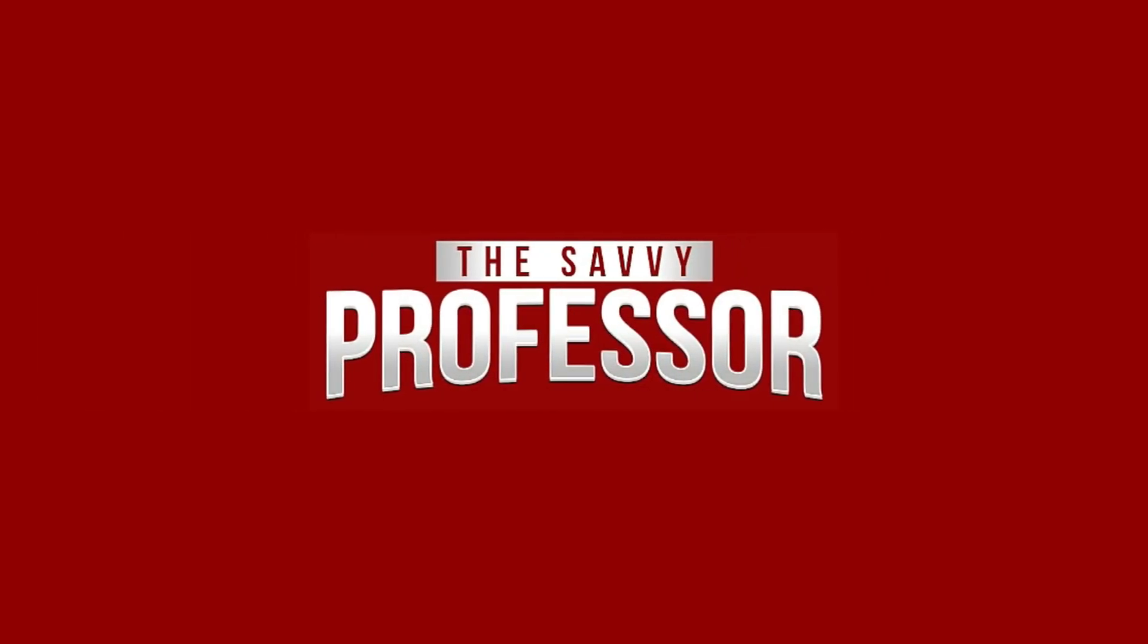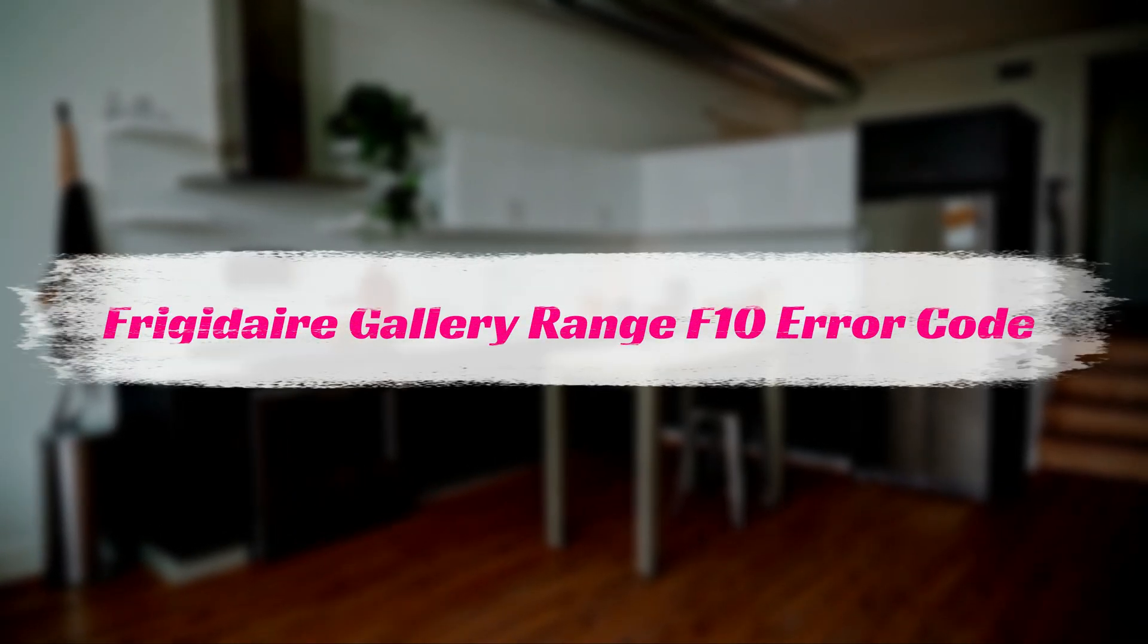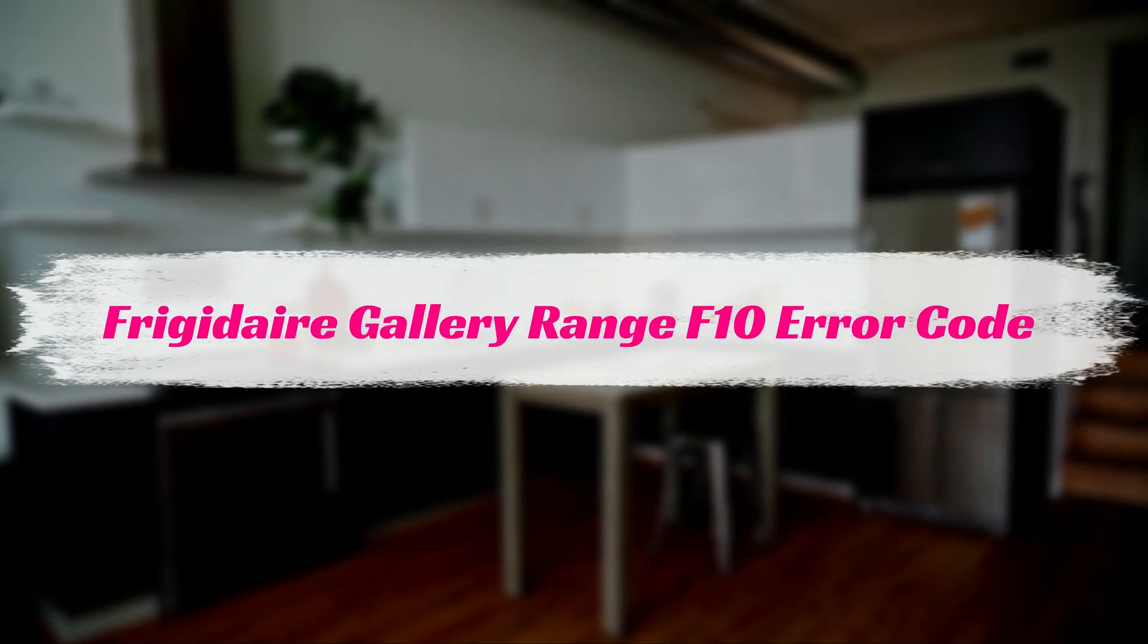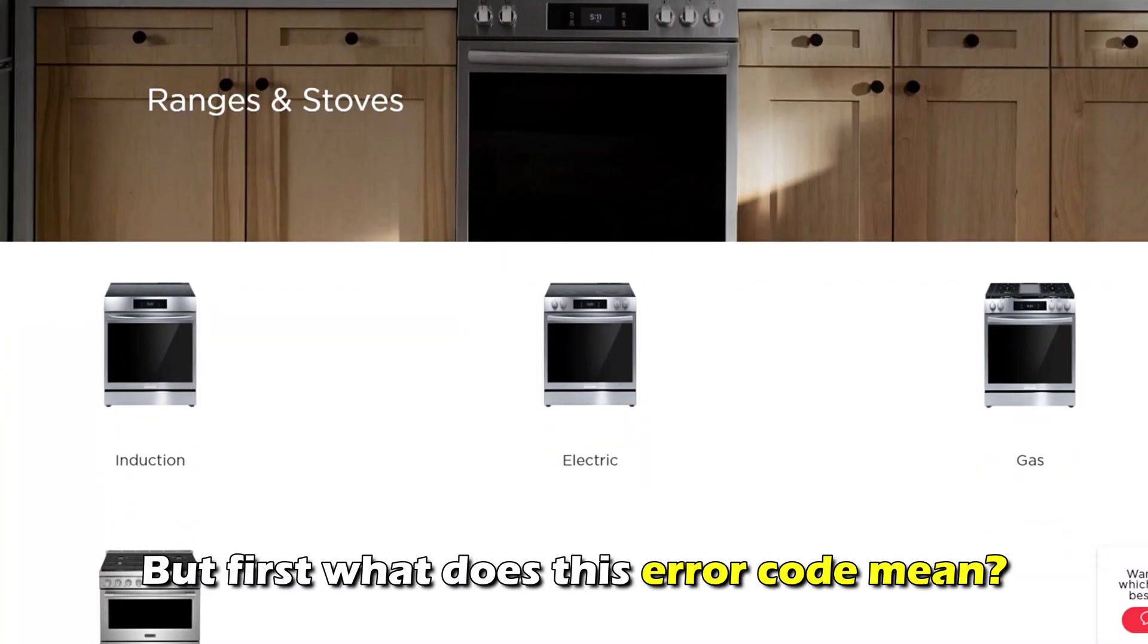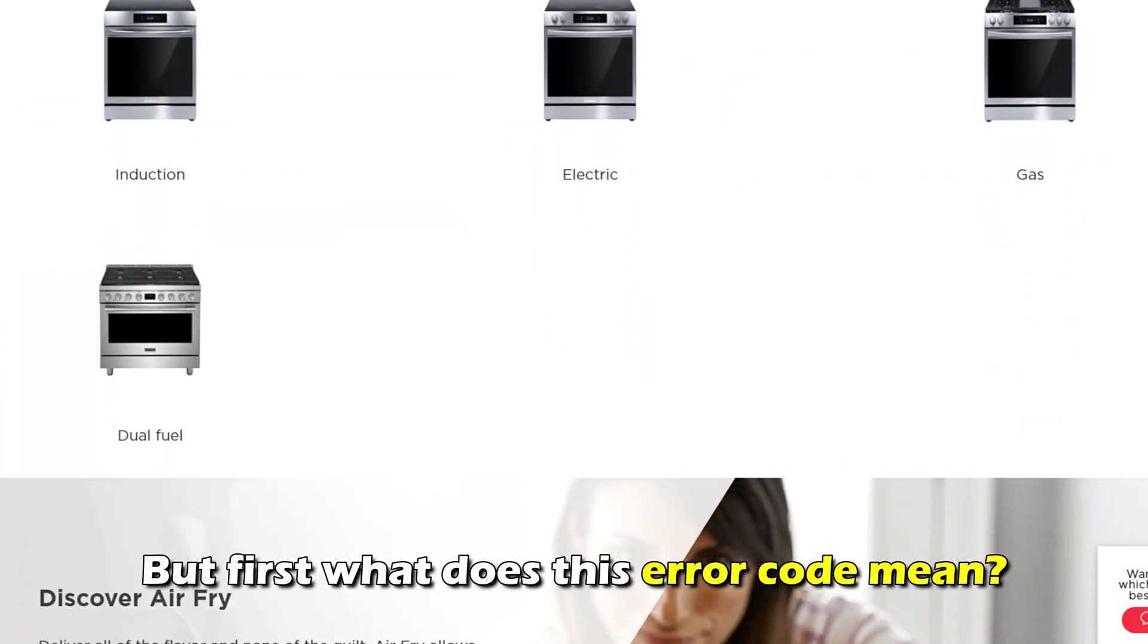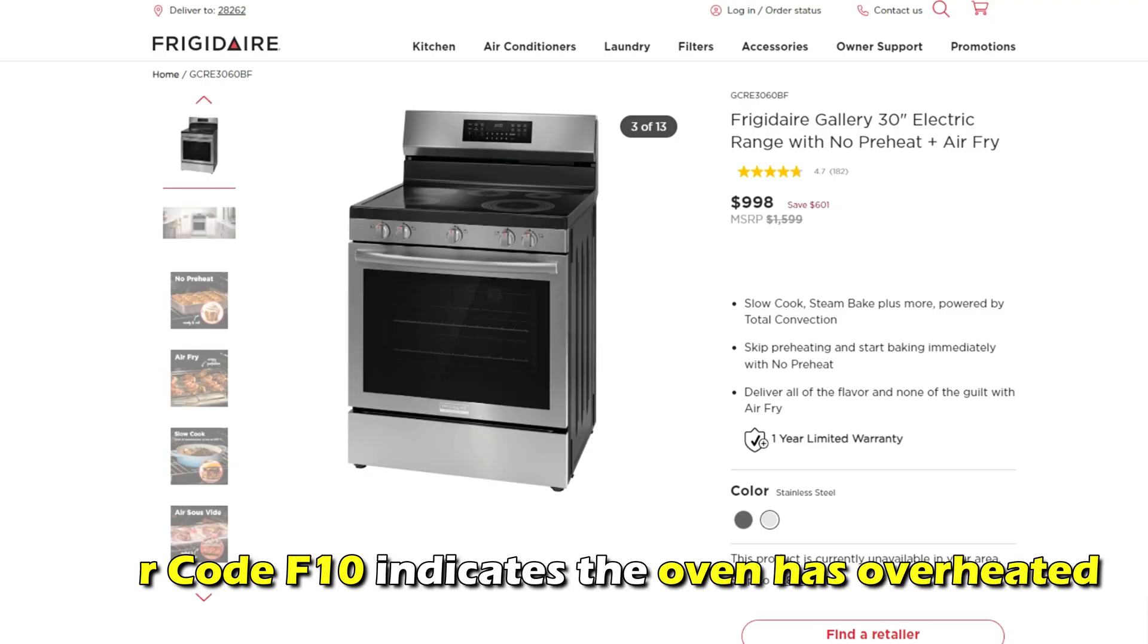Hi, this is Sarah from The Savvy Professor, and in today's video we'll discuss how to fix the Frigidaire Gallery Range Error Code F10. But first, what does this error code mean? Error code F10 indicates the oven has overheated.